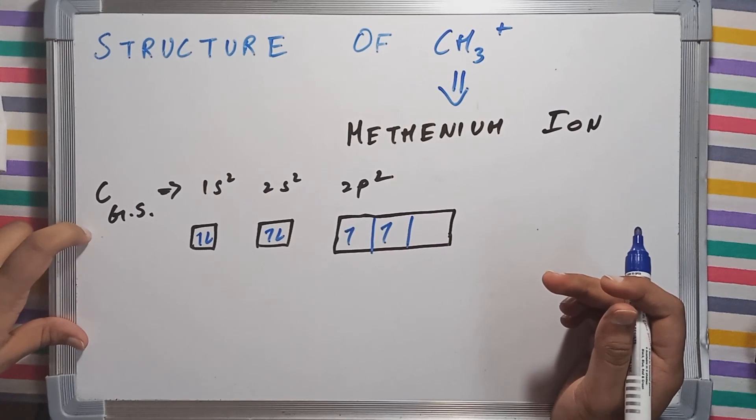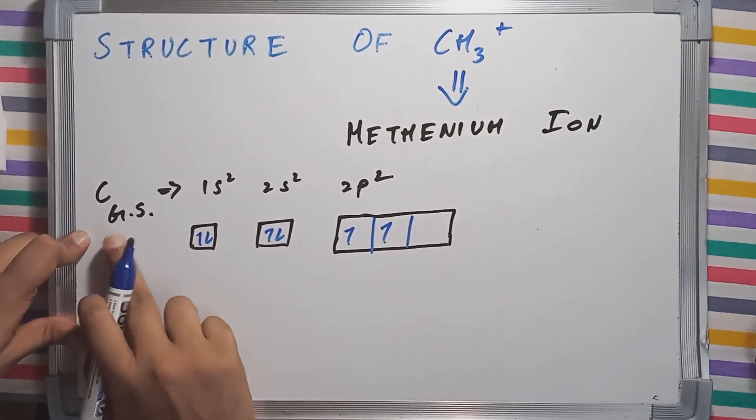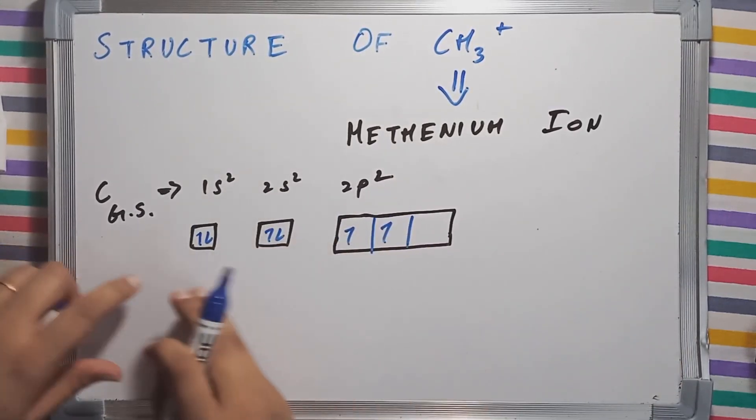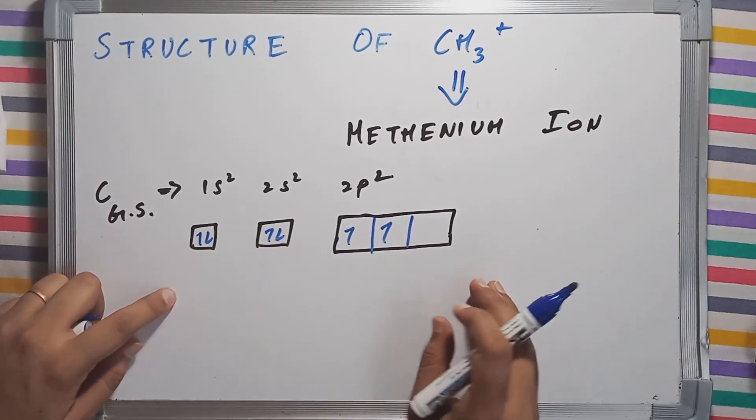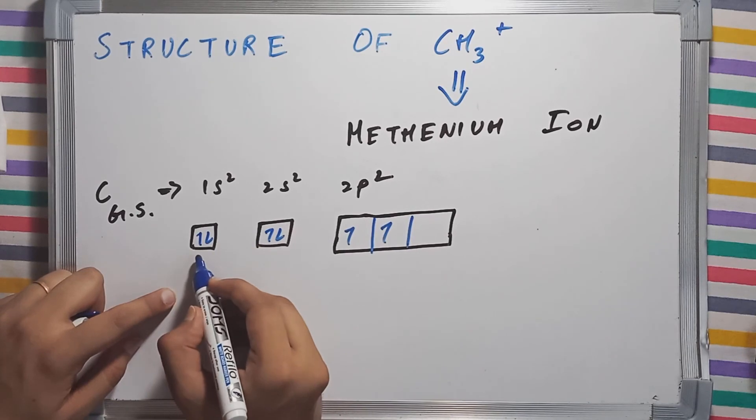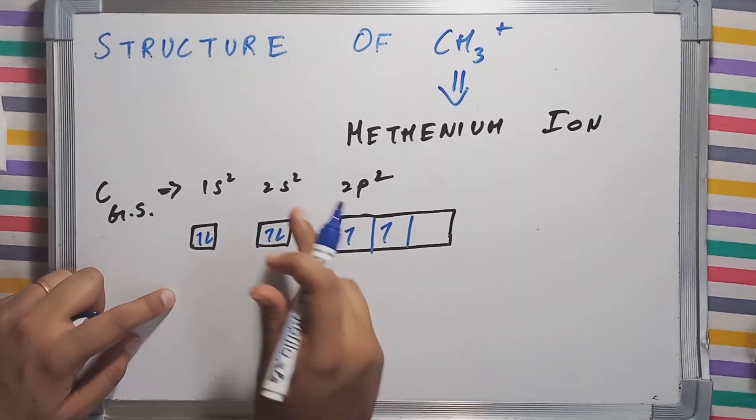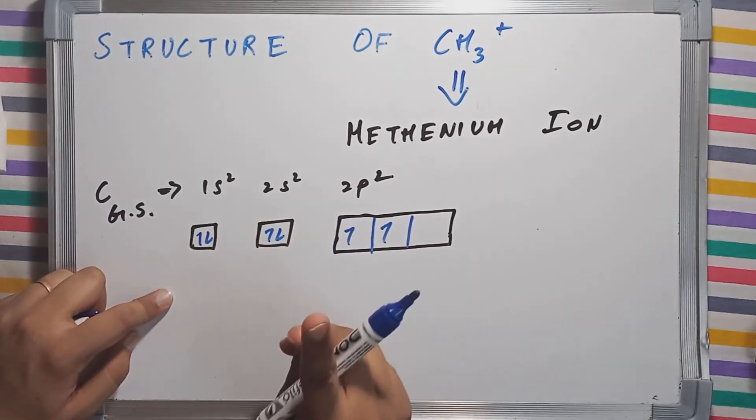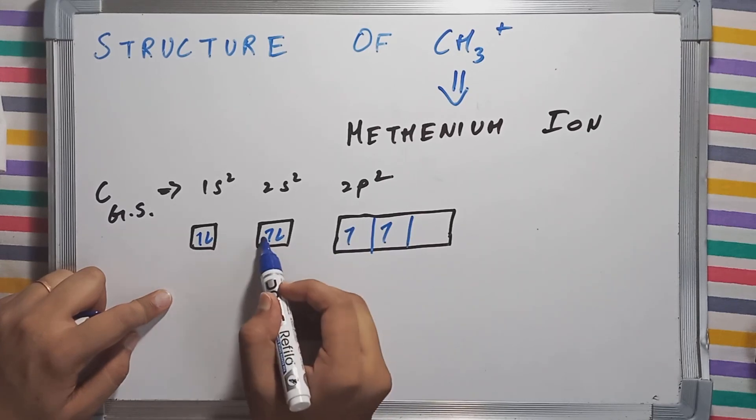Now the electronic configuration of carbon in ground state is 1s2, 2s2, 2p2. I have drawn the respective orbitals from the subshells. 1s has a single orbital having two electrons. Similarly, 2s subshell has a single orbital and it has two electrons.